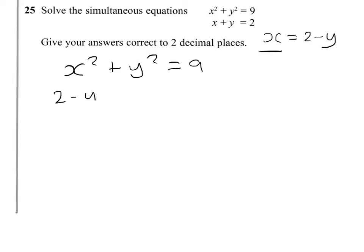We need to expand our brackets, and this will give me 2 minus y times 2 minus y plus y squared equals 9.